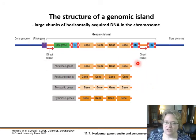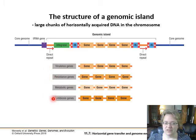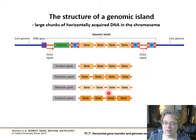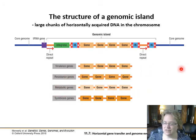Genomic islands can contain things like virulence genes, resistance genes, or metabolic pathway genes — like the lacZ operon is a kind of a genomic island — and the spaces between elements in these islands tend to be very short.